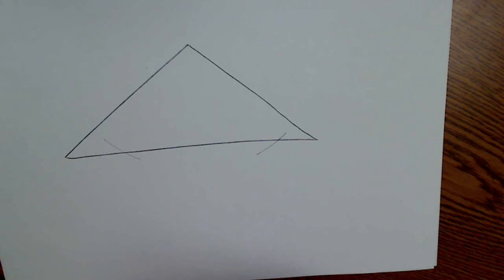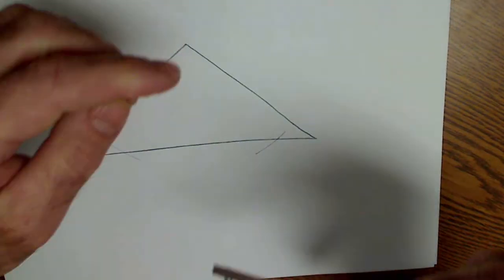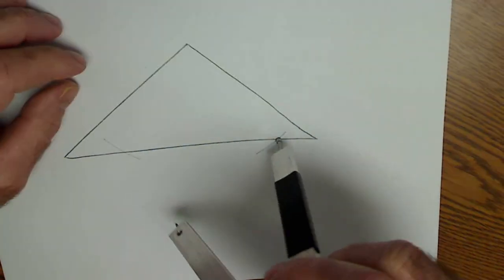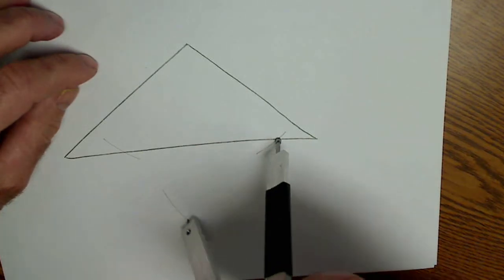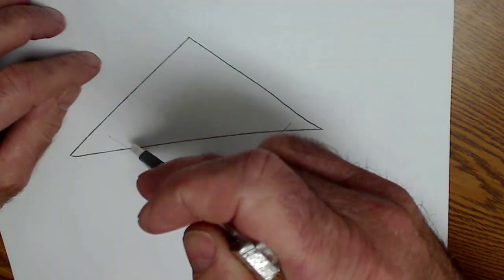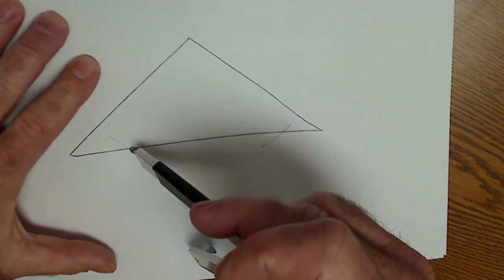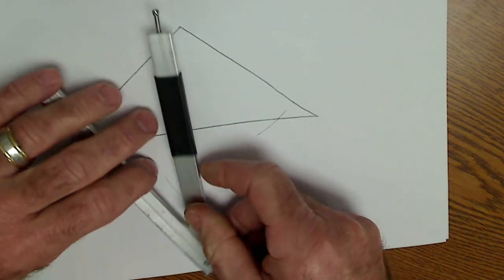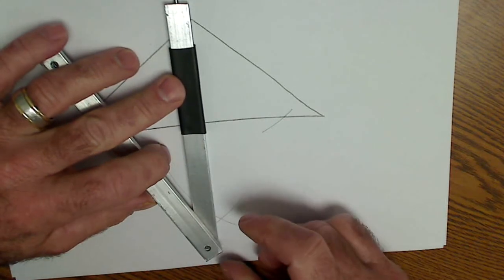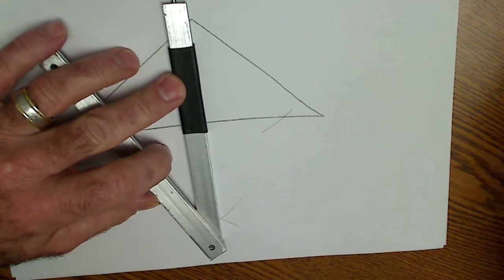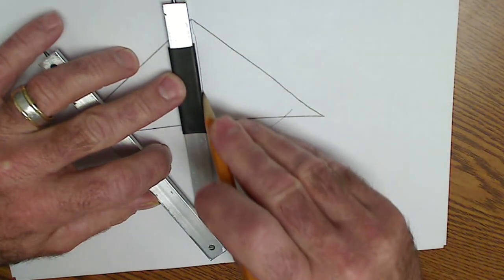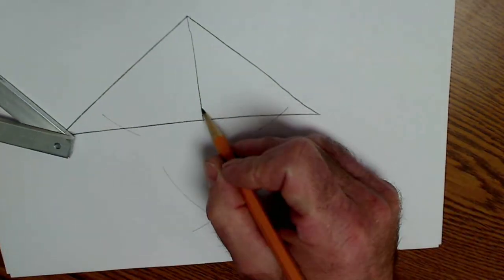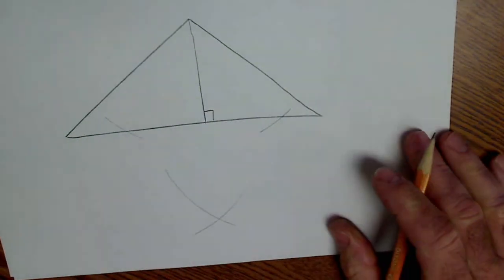Those are points equidistant from the vertex. Then from these points, I create another set of arcs. I'm actually just creating a perpendicular bisector between these two points. Now that I have those, I use my straight edge and connect those points. And that's how I create an altitude of a triangle.